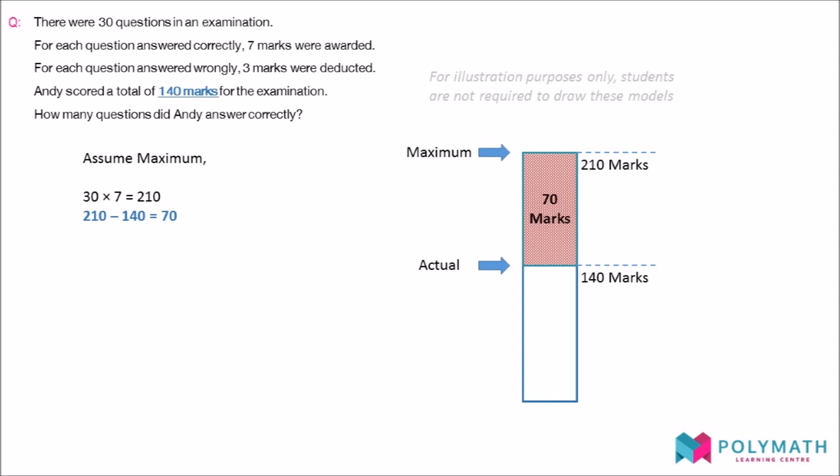Therefore, we must lower our assumption by 70 marks. How do we do that? We do that by replacing the correct answers that we have assumed with wrong answers that Andy must have provided.